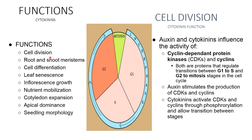Functions of cytokinins include: cell division, root and shoot meristems, cell differentiation, leaf senescence, inflorescence growth, nutrient mobilization, cotyledon expansion, apical dominance, and seedling morphology. For cell division, auxin and cytokinin influence the activity of cyclin-dependent protein kinases (CDKs), regulating G1-to-S and G2-to-mitosis stages in the cell cycle. Auxin stimulates production of CDKs and cyclins; cytokinins activate CDKs and cyclins through phosphorylation, allowing transitions between stages.